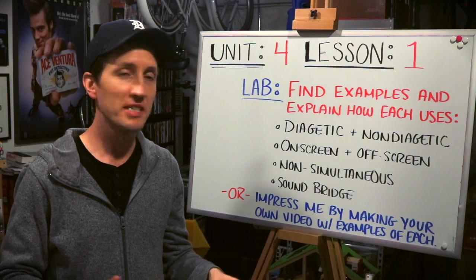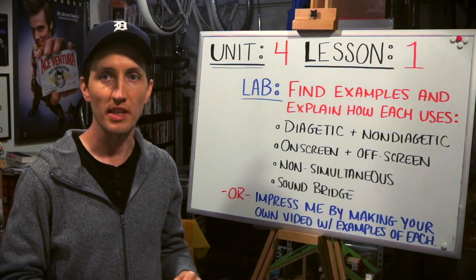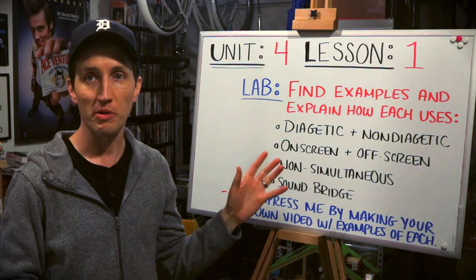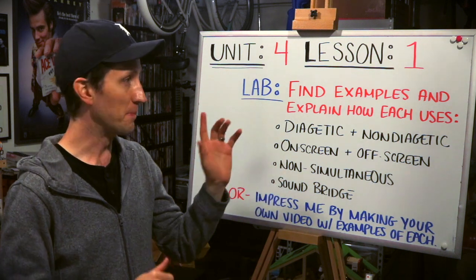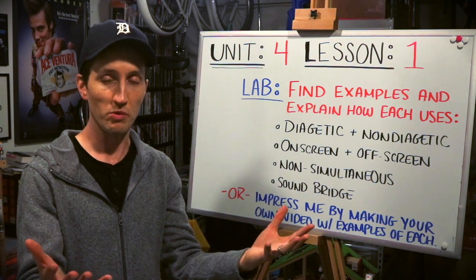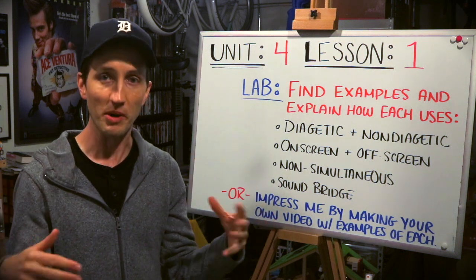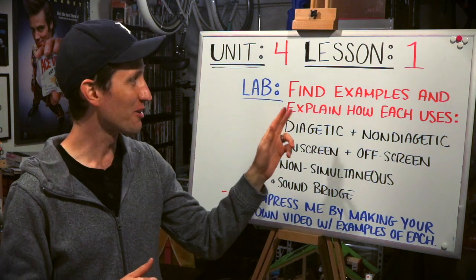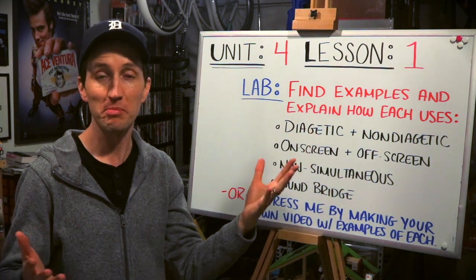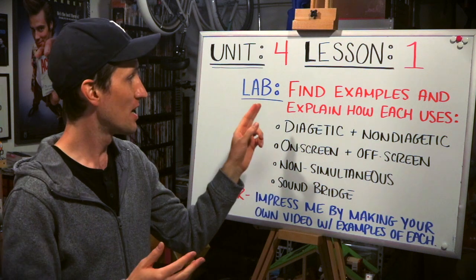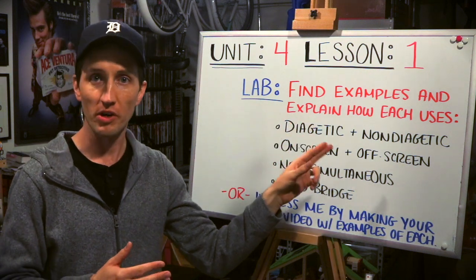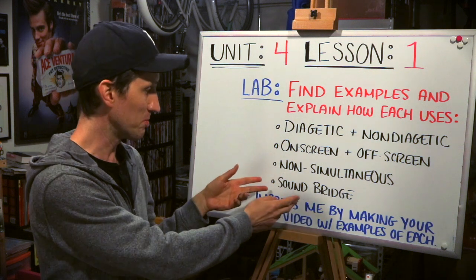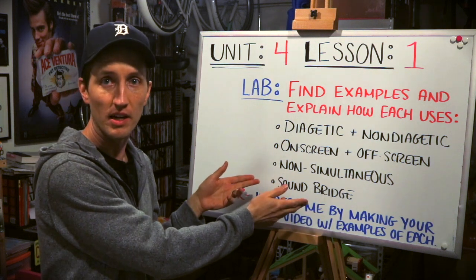Alright guys, so this is your lab assignment for Unit 4 Lesson 1 on Sound Relationships. Here's what I want you guys to do: in order to show me that you understand these concepts and that you have mastered sound relationships, I want you to find examples — clips from YouTube of existing films — and explain how each one of those examples utilizes the three different relationships and the transition.